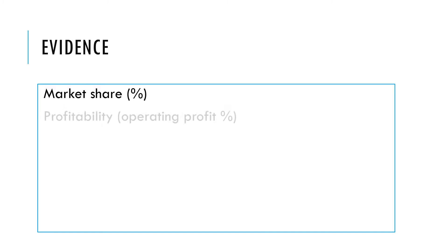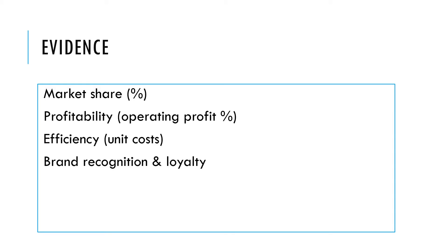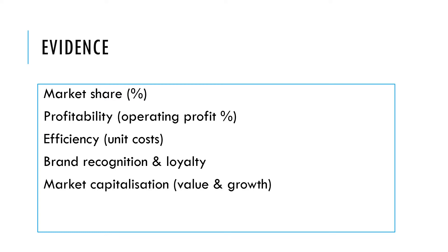Some examples of things we could look at for evidence might be our market share, our profitability, our efficiency, levels of brand recognition and loyalty which we can measure through surveys, our market capitalization, our value and whether we're growing — if we are a PLC with a share price — and our reputation for quality. We can use this to ascertain whether we have a particular strength or weakness and have evidence to back it up.